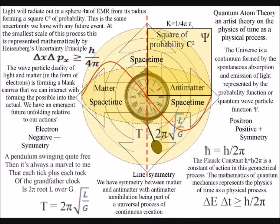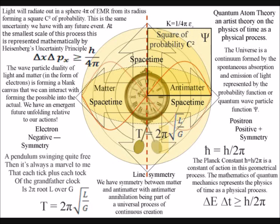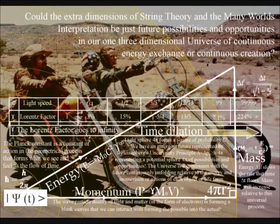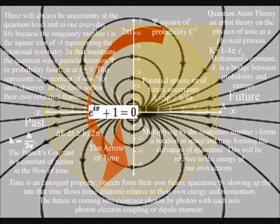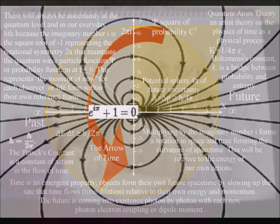This process forms the three-dimensional space of our everyday life, with a past we can never change and a future that is always uncertain. There will always be uncertainty, or probability, at the quantum level and in our everyday life, because the imaginary number i is the square root of minus one, representing the rotational symmetry — two pi — that maintains the quantum wave particle function, or probability function, at t equals zero.